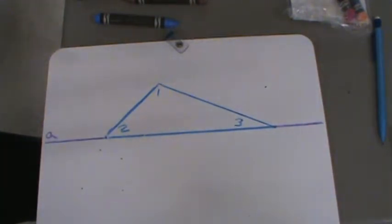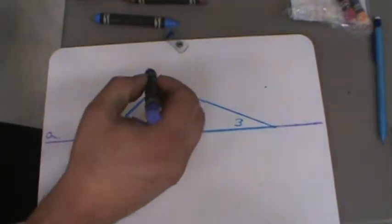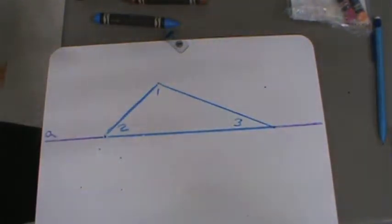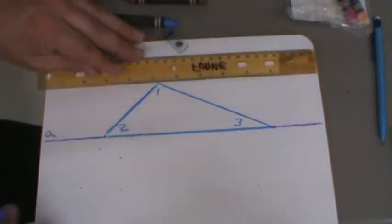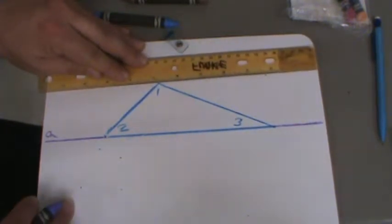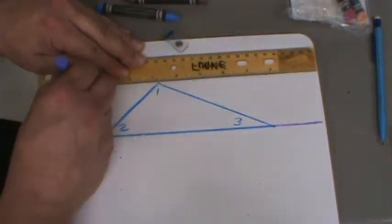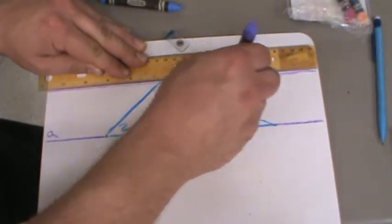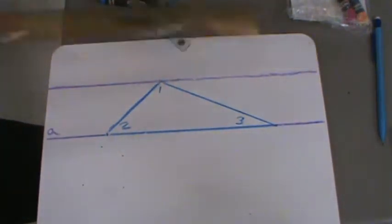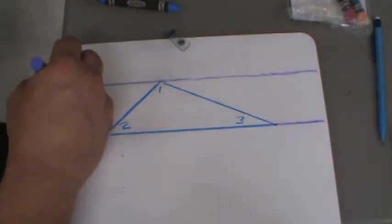Well, the parallel postulate states that through a point not on this line, there is exactly one parallel line to this line. So, if I look at this point and I draw a line through it that's going to be parallel to A, there's only one line that can be parallel to A that goes through that vertex there. And that's this line and we're going to call it B.